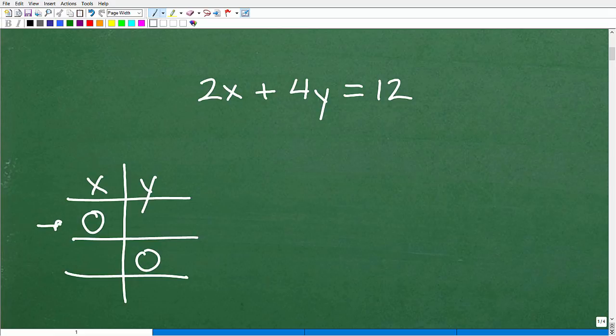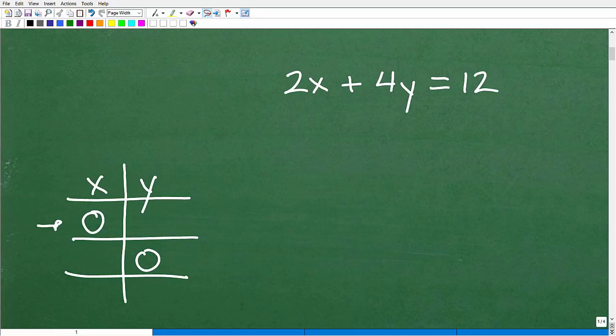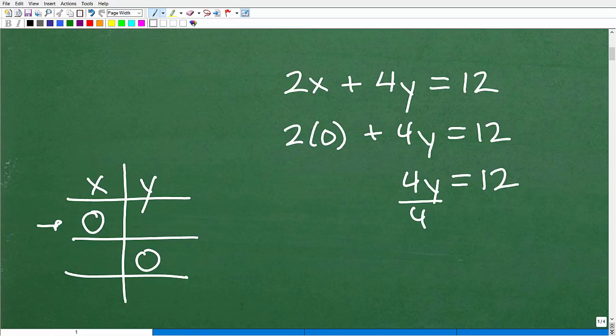All right, so here what we want to do first on this first row of this table is we want to plug in zero for x. I want to plug in zero for x and solve for y. That's what this means here. So let's do that first. So when x is zero, what is y? Well, let's plug in zero for x. We always use parentheses. So two times zero plus 4y equals 12. Two times zero is, of course, zero. So that just all goes away. So really, we're left with the equation 4y is equal to 12. I can divide both sides of the equation by four and I get y is equal to three.